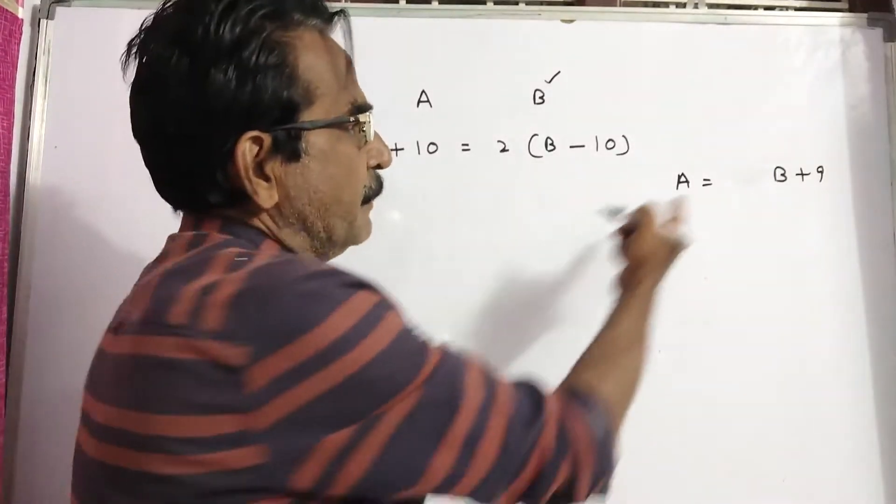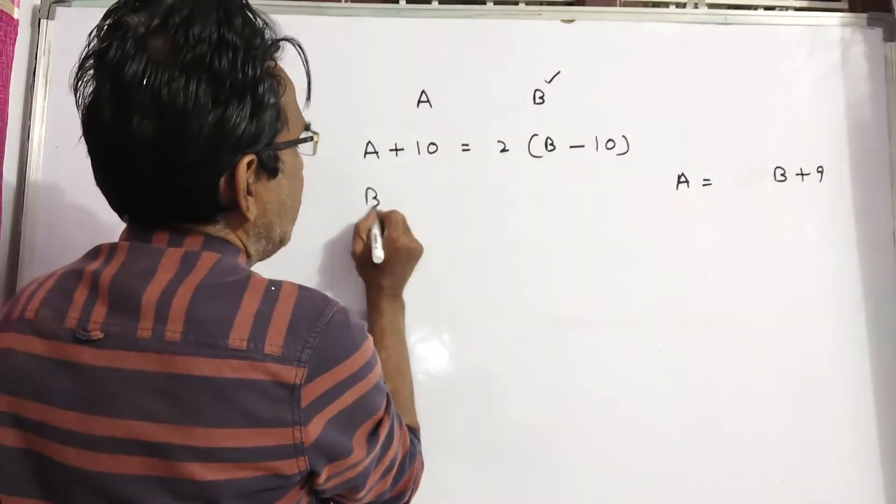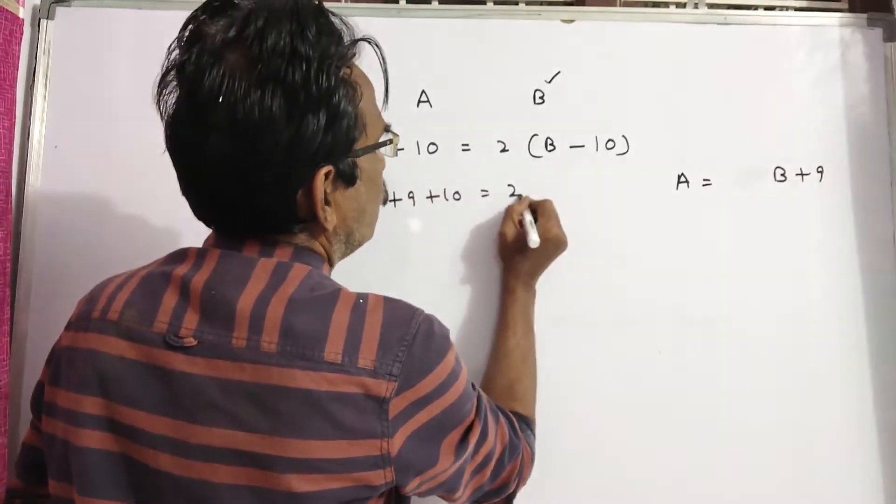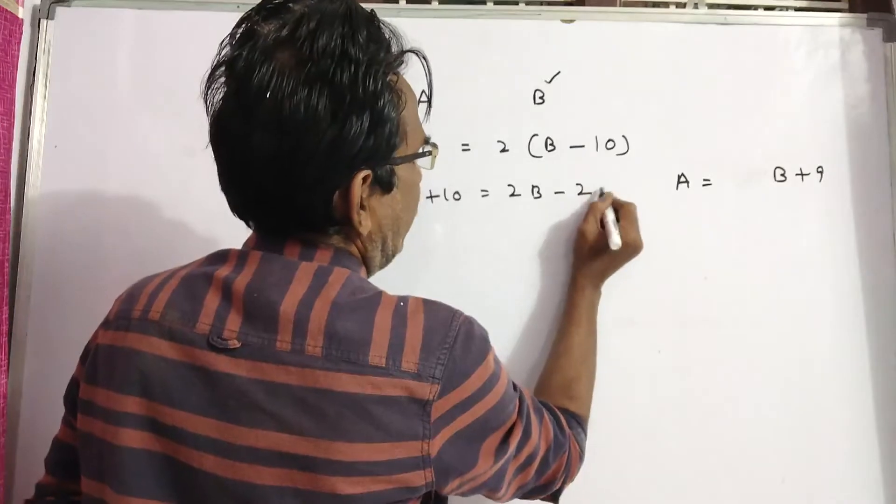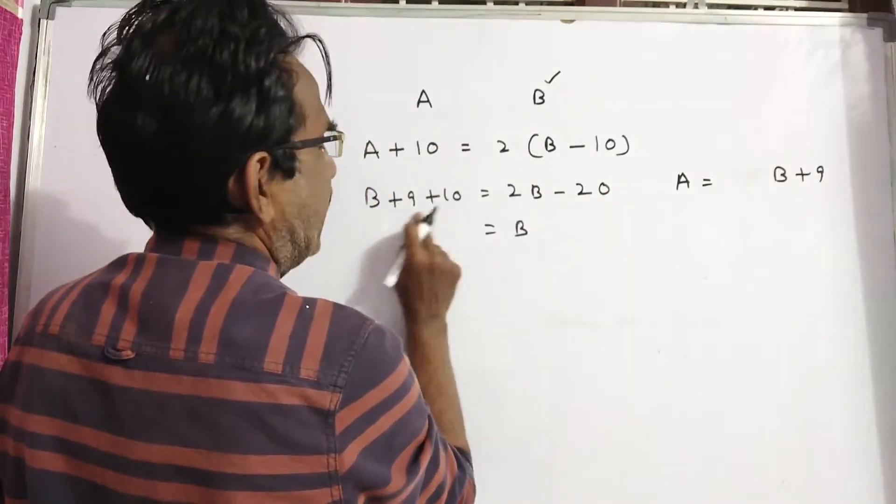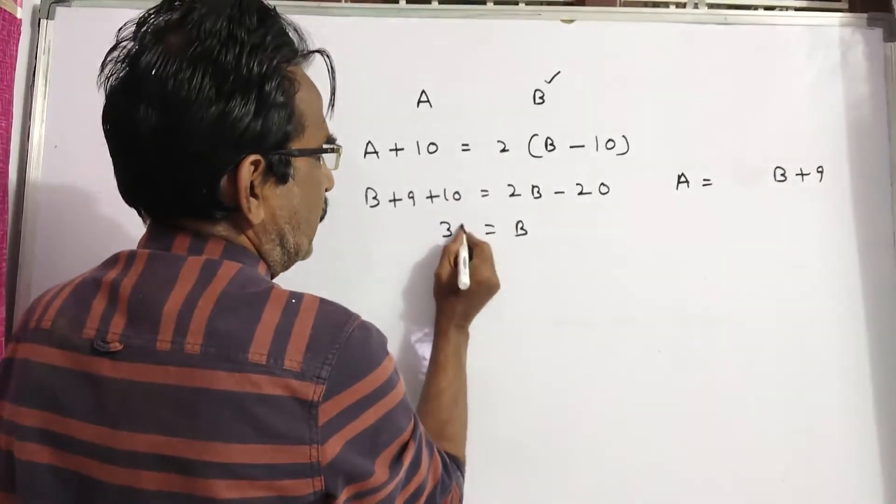So you can replace A with B plus 9. B plus 9 plus 10 is equal to 2B minus 20. 2B minus B. B is equal to 19 plus 20, 39.